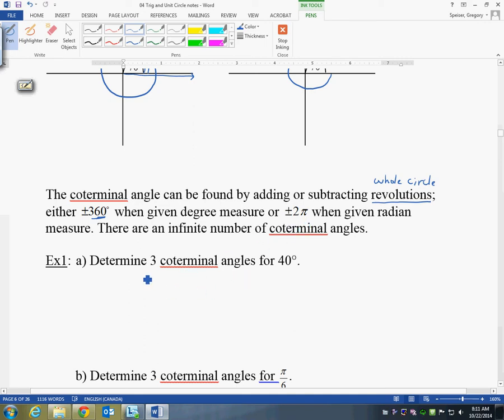Here's a question. They say find three coterminal angles for 40 degrees. So if we start with 40 degrees, why don't we start by adding 360? If I add 360 to that, then my next angle would be 400 degrees. And if I add another 360 to that, that would work out to 760 degrees. I can also go negative. So if I subtract 360, 40 minus 360 would be minus 320 degrees. So here are my three answers for three that are coterminal with 40 degrees.